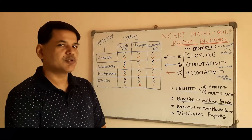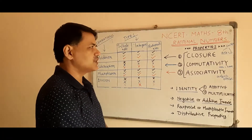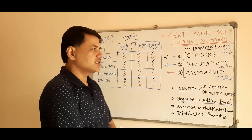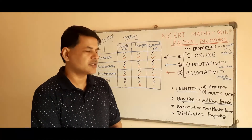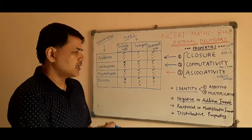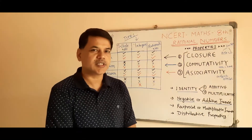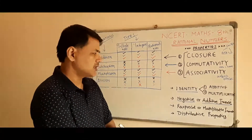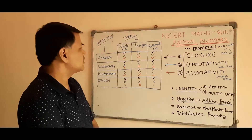In this video, we are going to see what are the different properties of rational numbers, like closure, commutative, associative, and distributive property, and also a few things like what are identities, and what is inverse — negative and reciprocal.